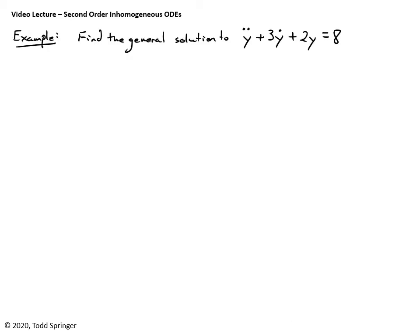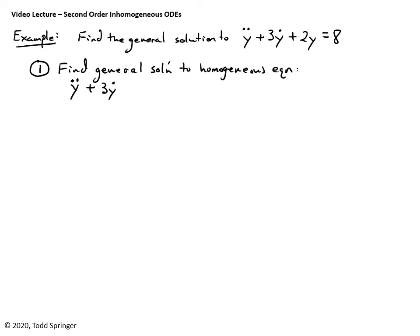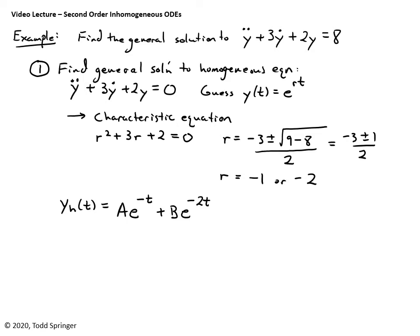Here's a simple example: find the general solution to y'' + 3y' + 2y = 8. First, find the general solution to the homogeneous equation: y'' + 3y' + 2y = 0, where all terms contain y. You know how to do this — guess y = e^(rt), find the characteristic equation, and get those two solutions. The homogeneous solution is found quickly using this standard method.